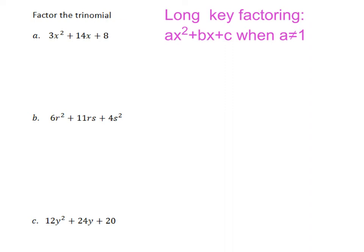In this video I'm going to be going over how to factor trinomials when there is a coefficient in front. We call this factoring using the long key method. So take a look over here. We had this in the last video. It's ax squared plus bx plus c. But here this is when a is not equal to 1.